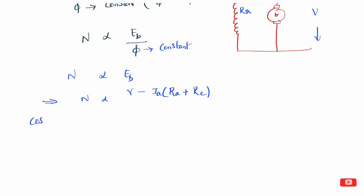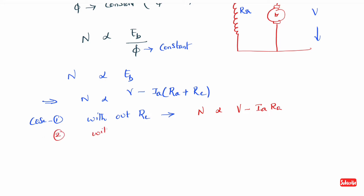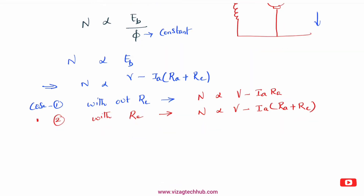Case 1: without external resistance Re. The formula gives N proportional to V minus Ia·Ra. Case 2: with external resistance Re connected. The formula gives speed proportional to V minus Ia into Ra plus Re. In case 1, only Ra is there; in case 2, Ra plus Re is there.